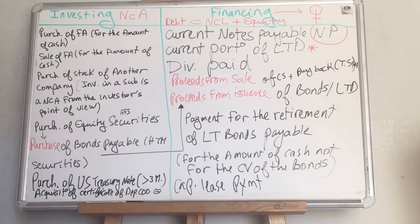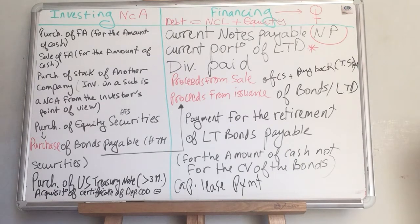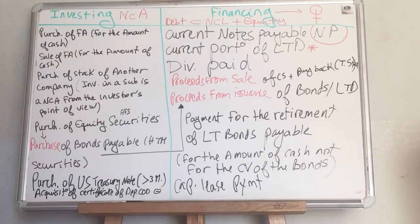We will solve many examples, so do not worry if you don't understand the concept right now. For example: I'm selling a fixed asset with a cost of $100,000, accumulated depreciation of $40,000, and a carrying amount of $60,000, for $40,000. I just care about the cash — I sold it for $40,000. That $40,000 is the amount reported in the investing section.